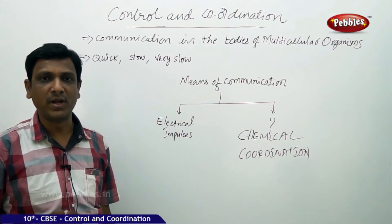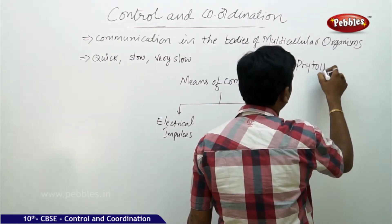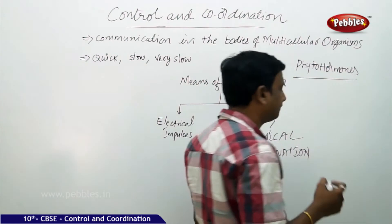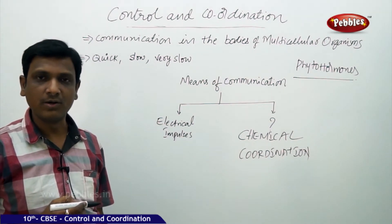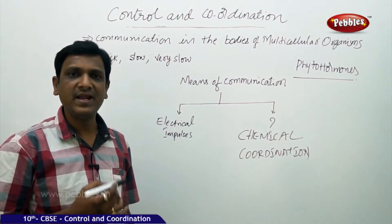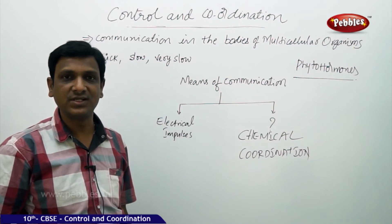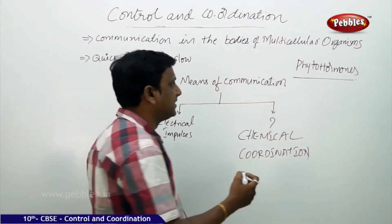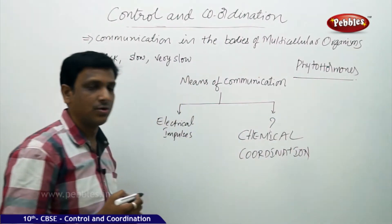Generally, we use the term 'hormones' for these chemical messengers. The hormones found in plants are called phytohormones. Even in animals and human beings, hormones play a major role in growth, development, and the execution of various changes in the body at different stages of life — all controlled and coordinated by hormones. The hormones present in plants are called phytohormones.